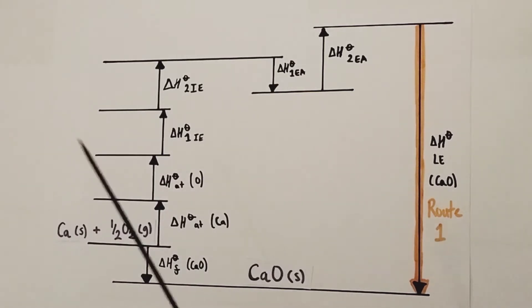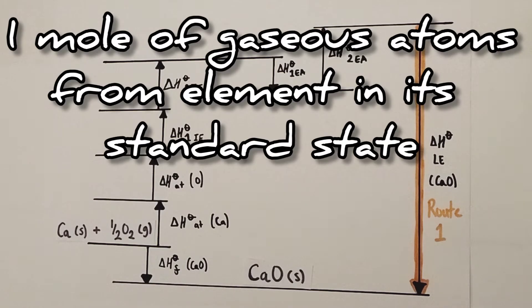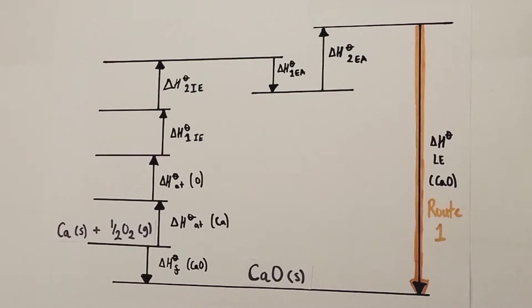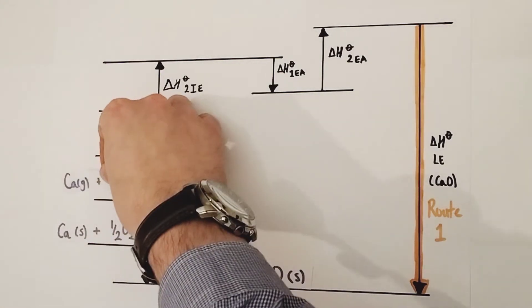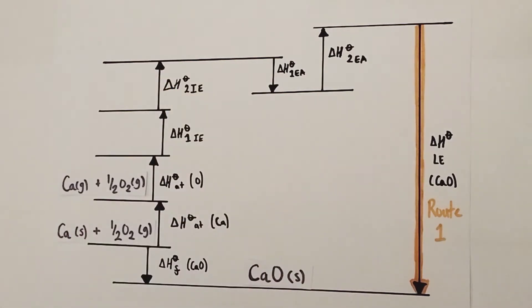Next we have the enthalpy change for the atomization of Calcium. That's the enthalpy change for the formation of one mole of gaseous atoms from that element in its standard state. The standard state of Calcium being solid, and so to change it into its gaseous state, I simply write the state symbol G next to the Calcium. So it's been changed from the solid state to the gaseous state.